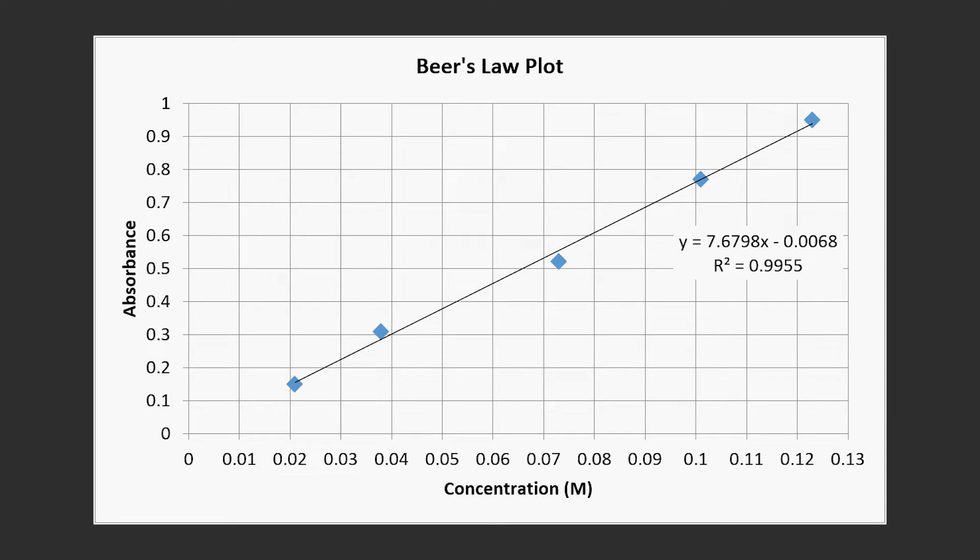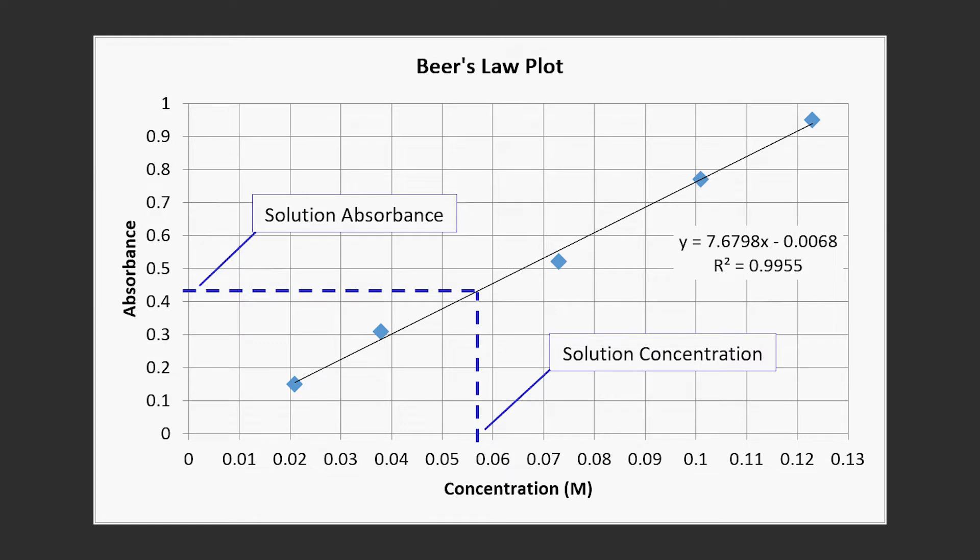If, for example, we had a solution with an absorbance of .43, you'd put that here on the y-axis, then come straight over to the best fit line, then go straight down, and see what concentration you got. In this case, the line goes to about .057, so this solution's concentration is .057 moles per liter.